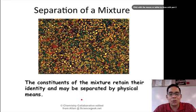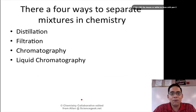When we separate mixtures, typically the constituents of the mixture retain their identity and can be separated by physical means. And there are basically four ways that we can separate mixtures in chemistry.